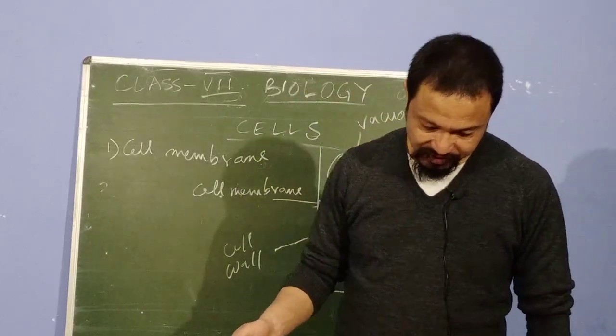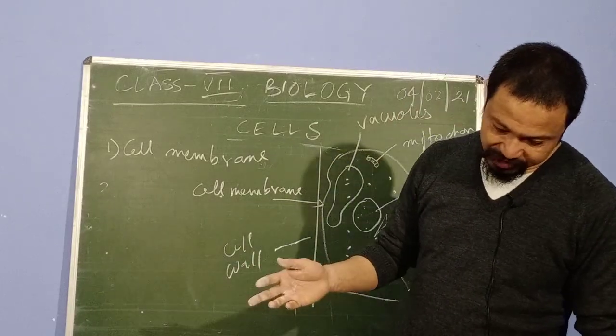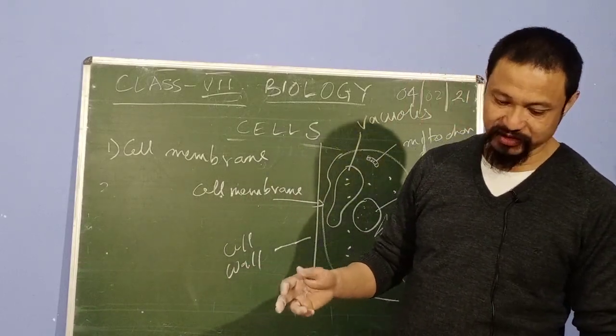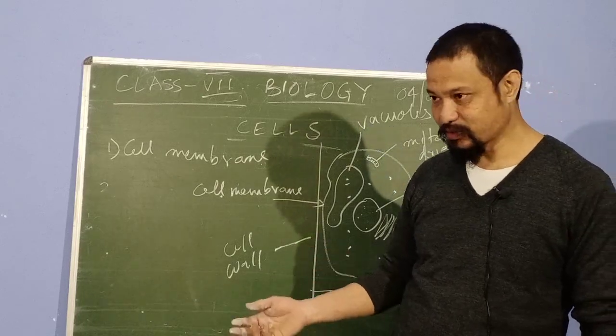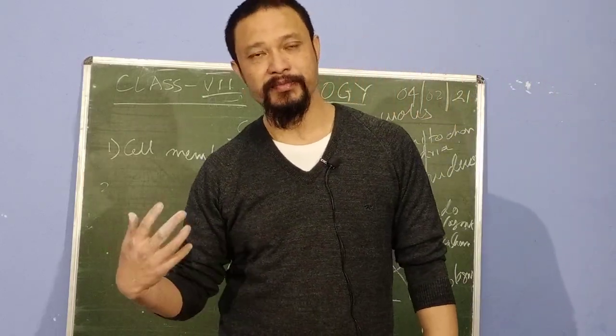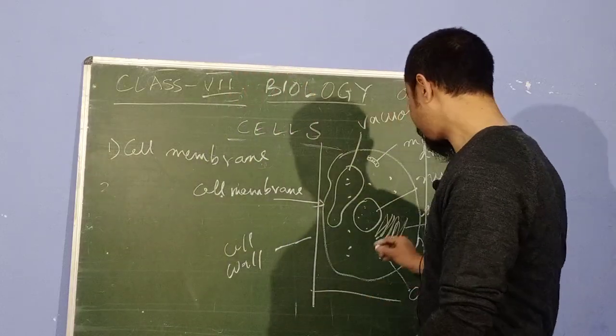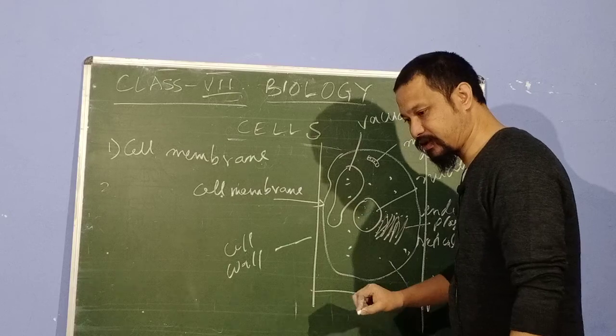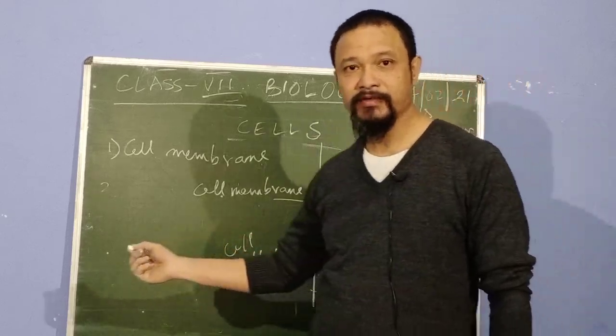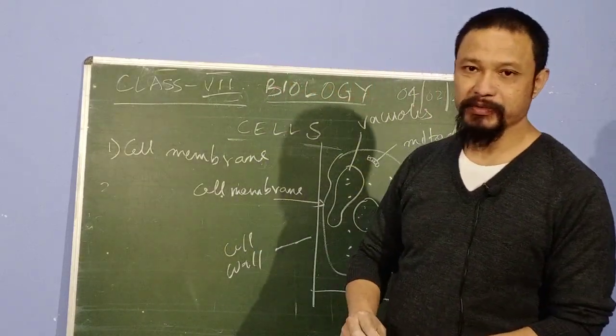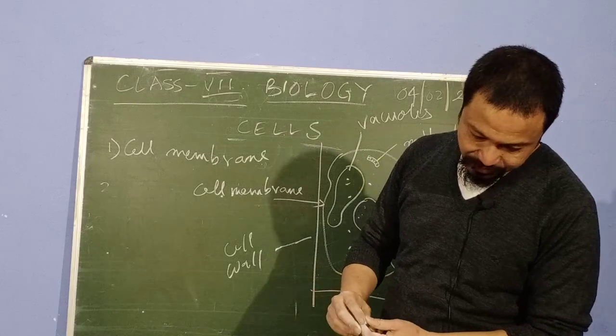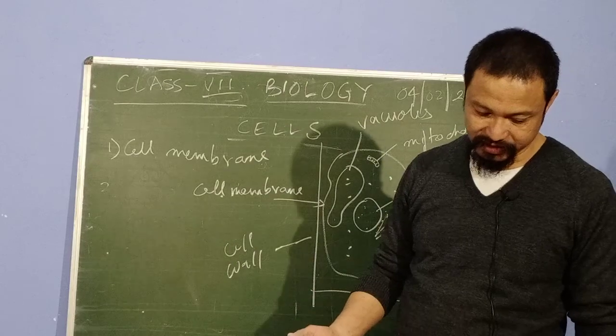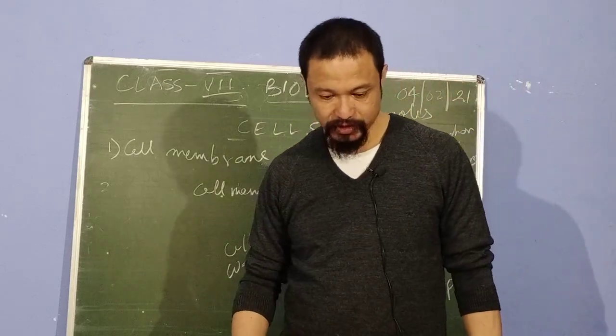The function of the rough endoplasmic reticulum is to synthesize and transport the proteins once they have been made by the ribosomes. There's another organelle called ribosomes where proteins are made. In fact, on endoplasmic reticulum you'll see a lot of dots like this. They're called ribosomes. It's a site for protein synthesis where proteins are made. So endoplasmic reticulum basically helps in the synthesis and transfer of the proteins once they have been made by the ribosomes.